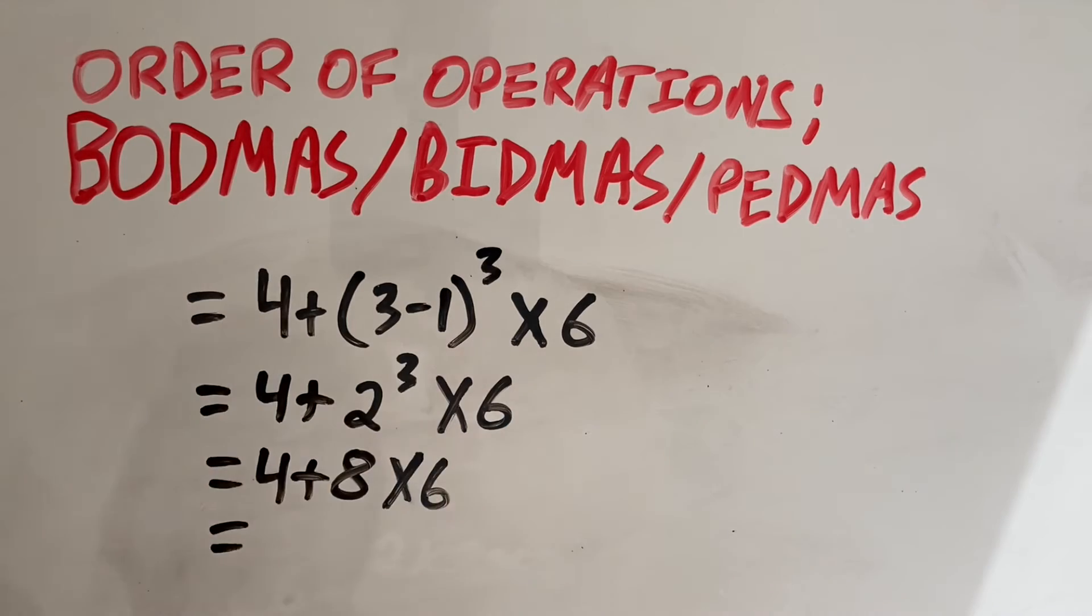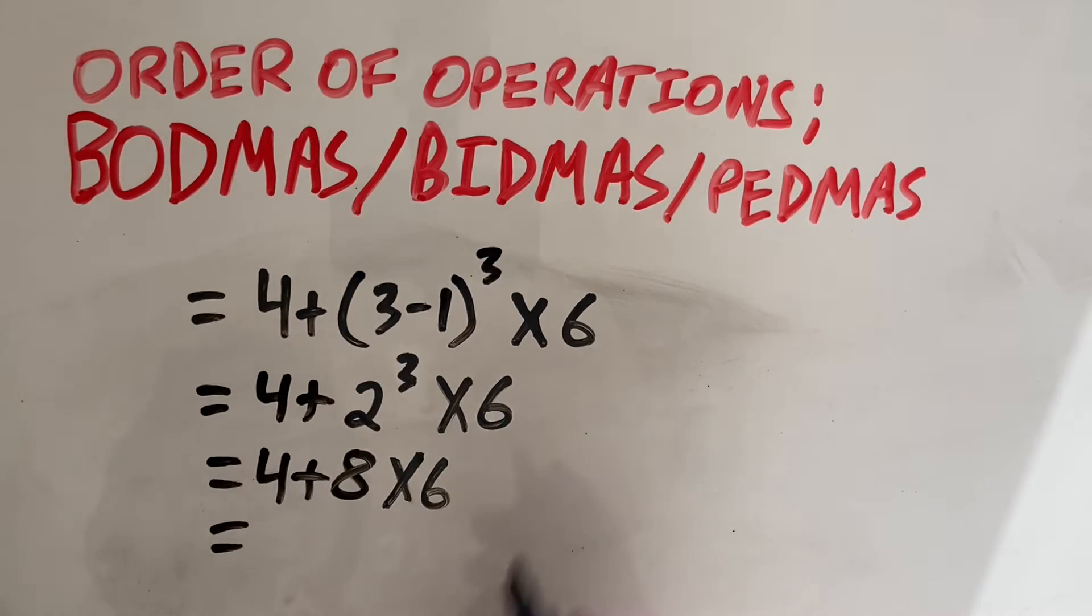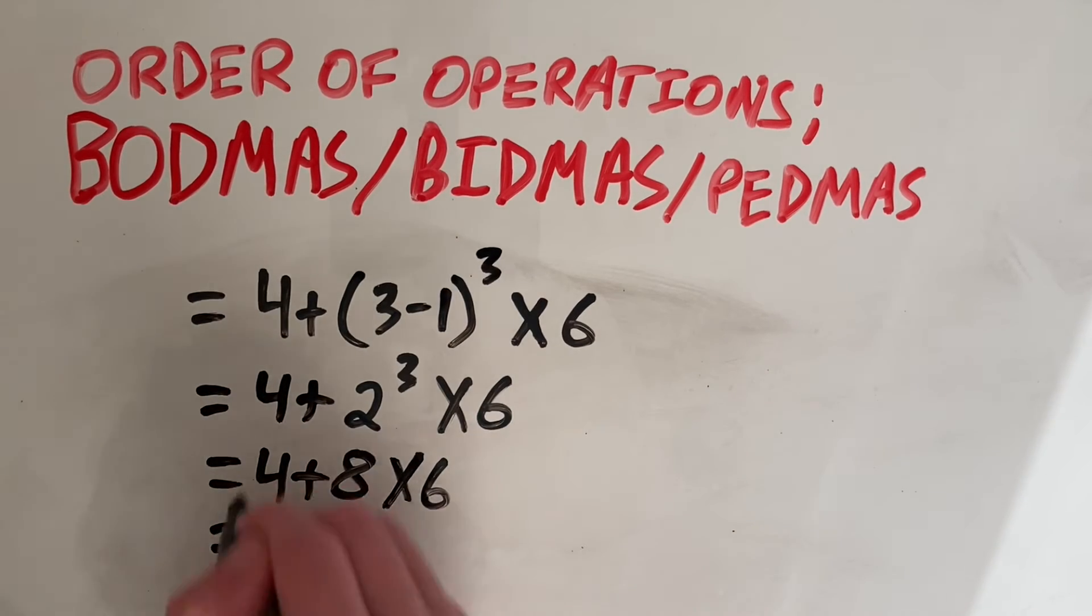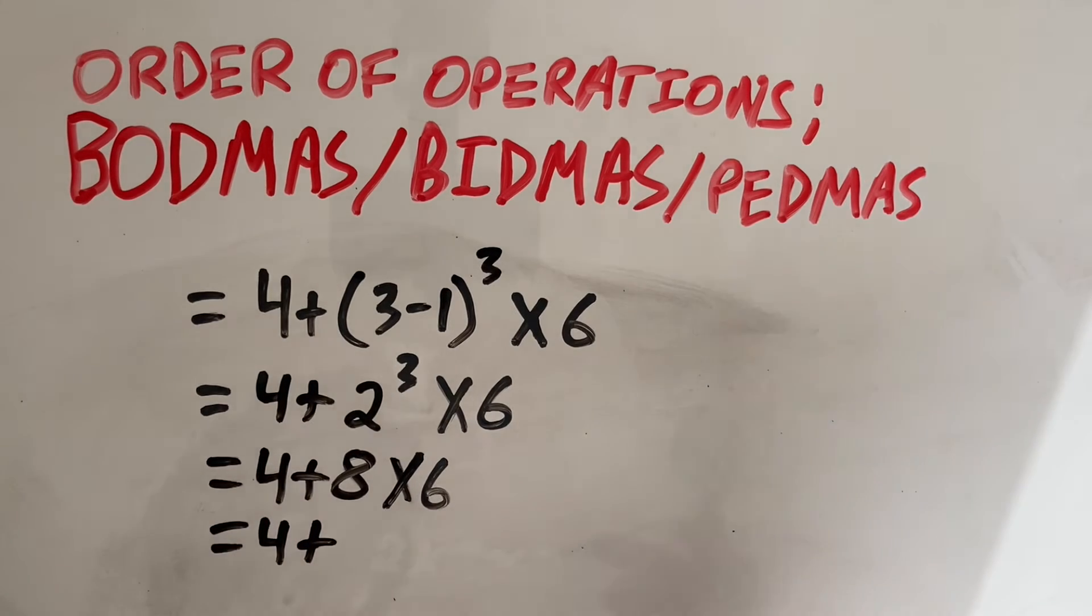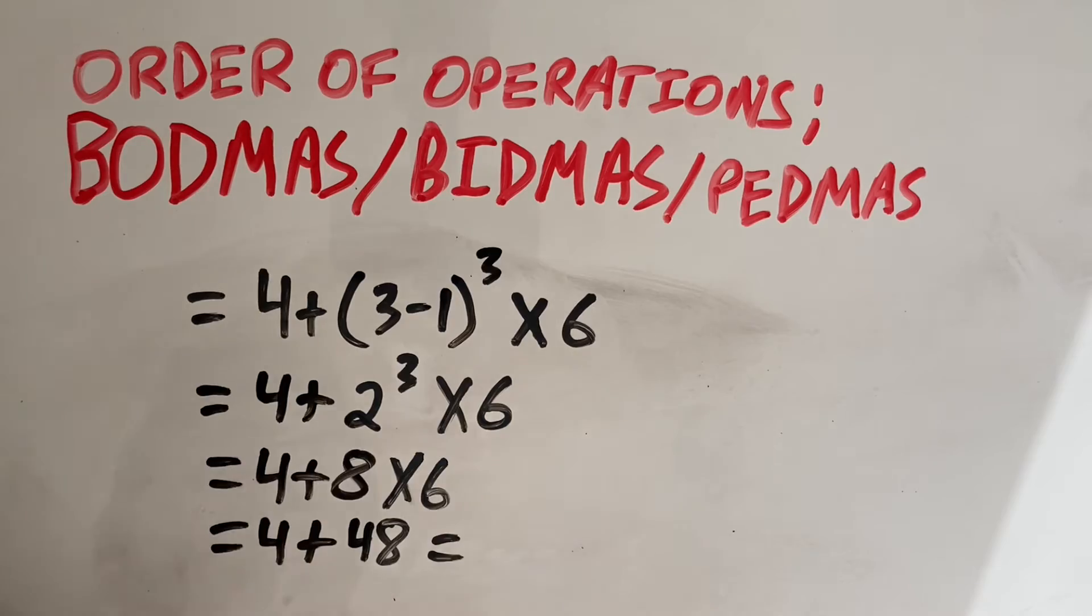And next, we look at our list and multiplication. We have no division so we can skip it. And multiplication comes next. So again, we ignore this 4 for now because that's addition. So we don't do 4 plus 8 yet. Instead, we do 8 times 6, which is 48. And now we can finally do our addition to give us our answer of 52.